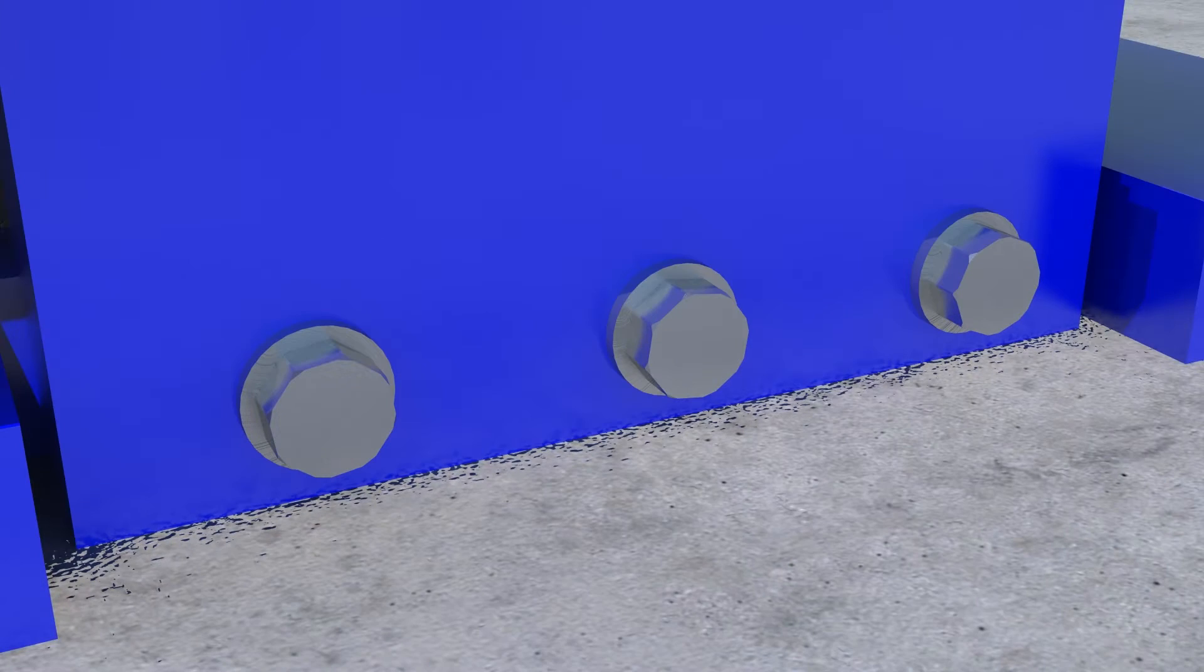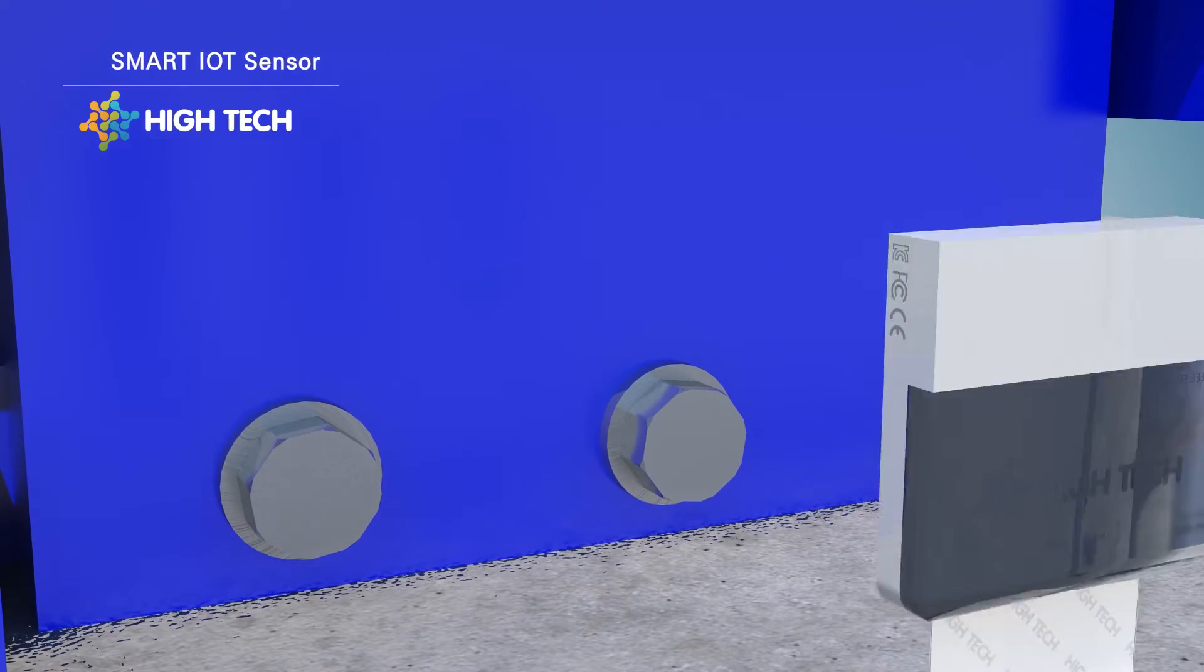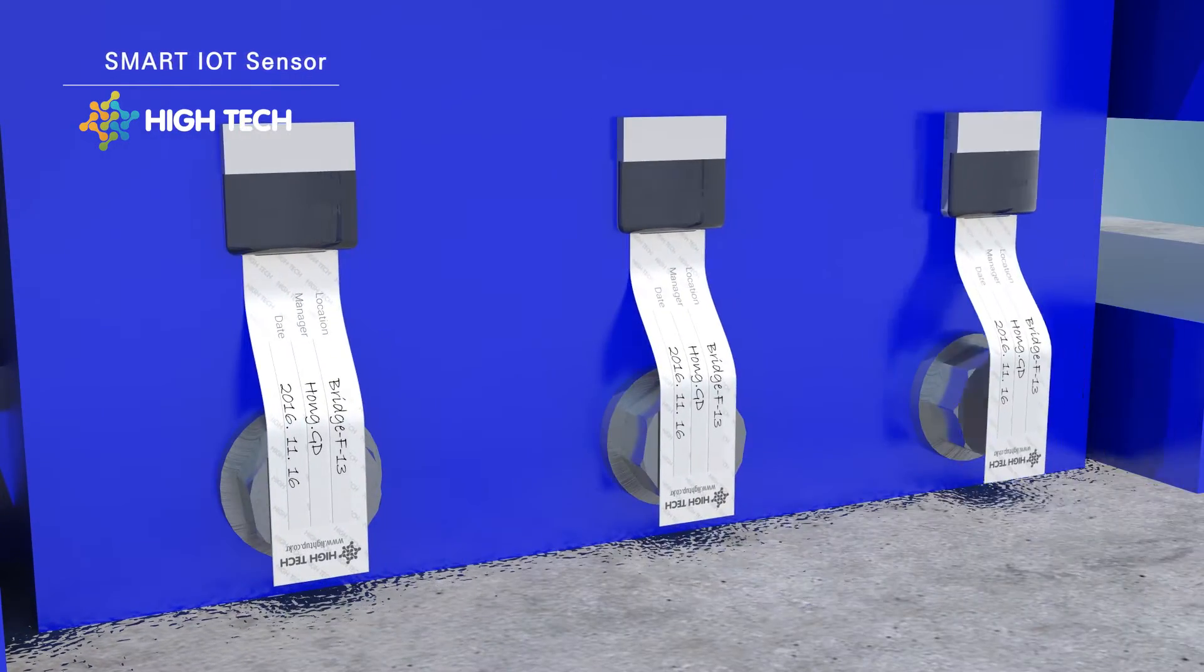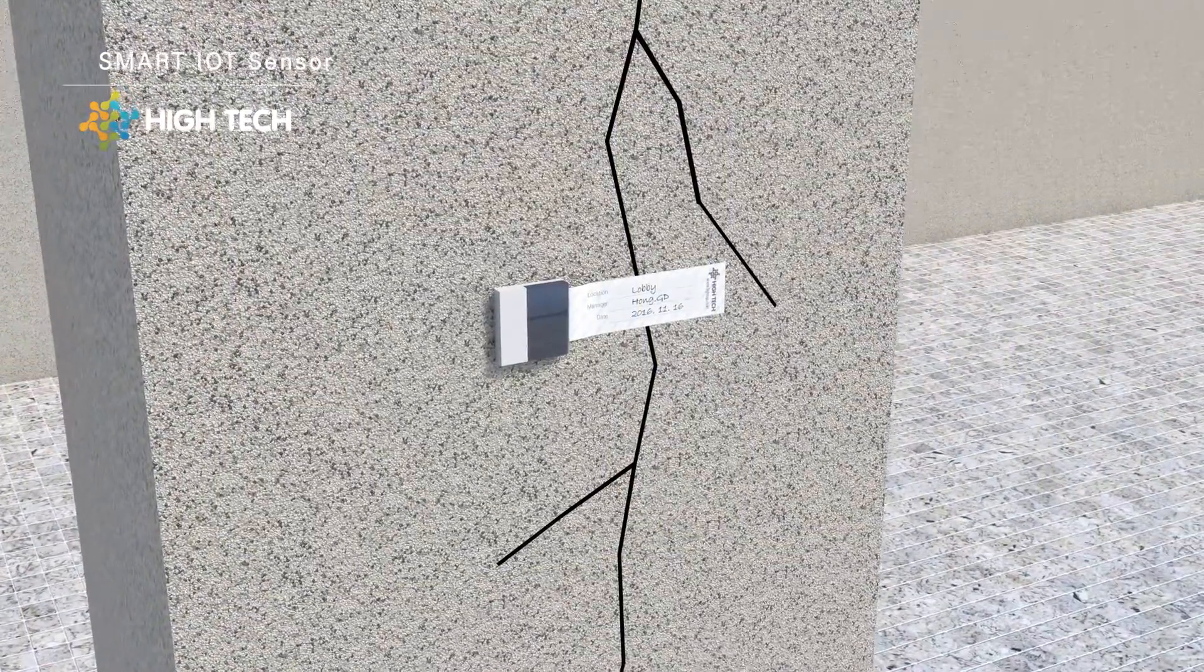Hi-Tech thus developed its Smart IoT Sensor, which is adhered to various structures like buildings and bolts to sense any loosening.